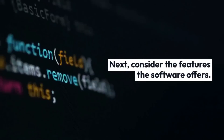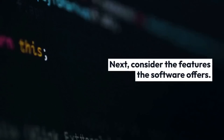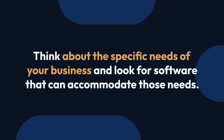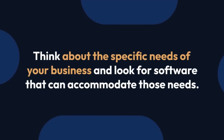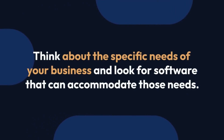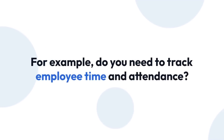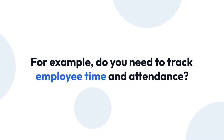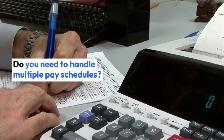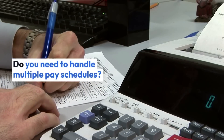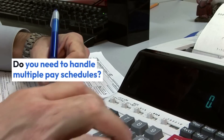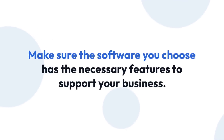2. Features. Next, consider the features the software offers. Think about the specific needs of your business and look for software that can accommodate those needs. For example, do you need to track employee time and attendance? Do you need to handle multiple pay schedules? Make sure the software you choose has the necessary features to support your business.